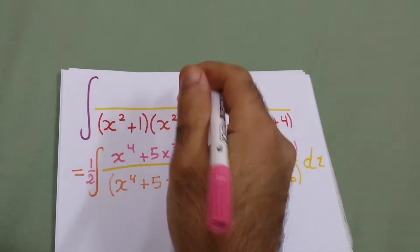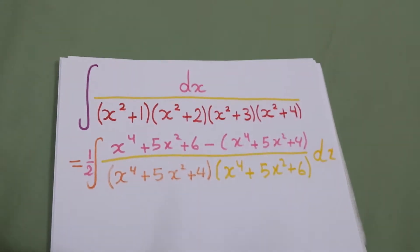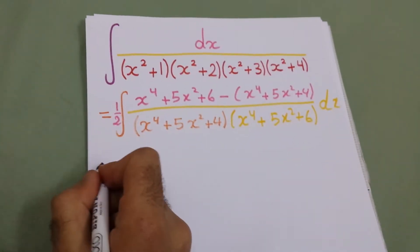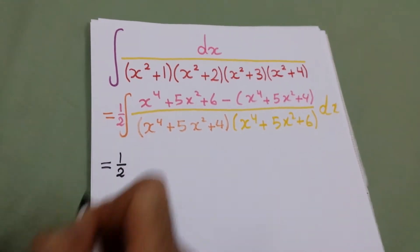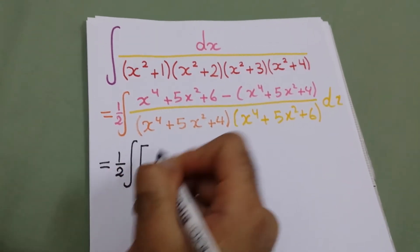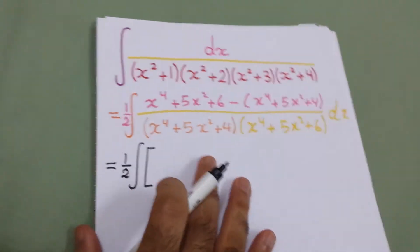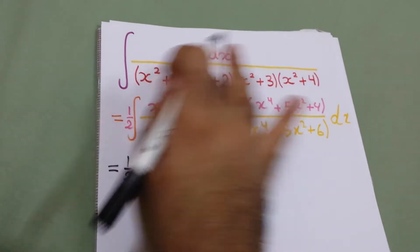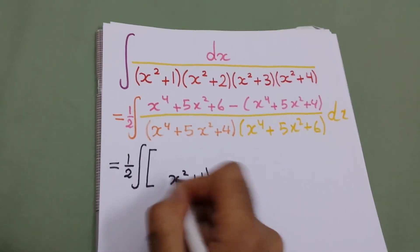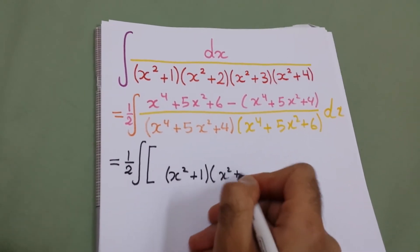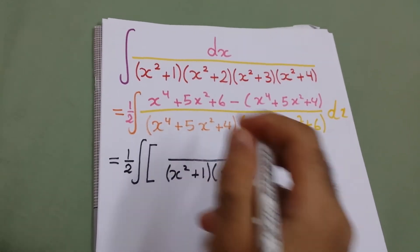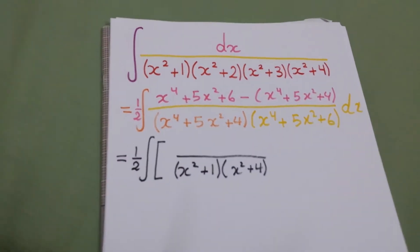So all this equals the numerator, and we divide by 2 to make it 1 dx. Now we divide this by the denominator: it will equal one-half times the integral. This will go with this, so we will have only this bracket, which is the multiplication of x squared plus 1 and x squared plus 4, with 1 in the numerator.